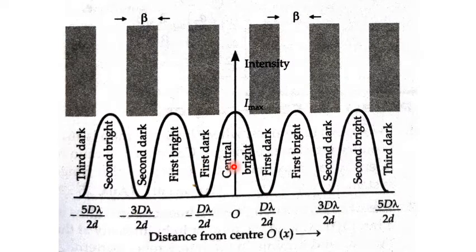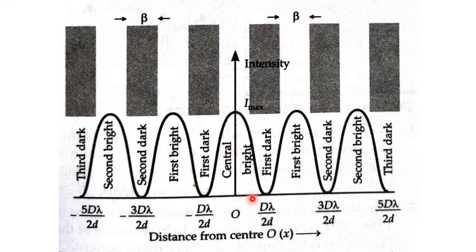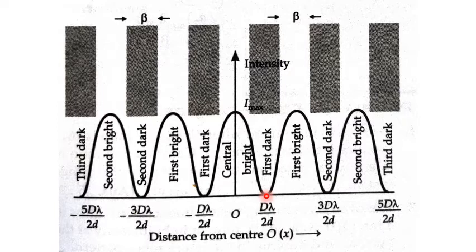This is your interference pattern. At the center point O, we obtain a central bright fringe, denoted Imax, which is 4KA². At a distance D·λ/(2d) we obtain the first dark fringe. You can refer to my previous videos where I derived the positions for dark fringes — dark fringes occur at odd multiples of D·λ/(2d), i.e., D·λ/(2d), 3D·λ/(2d), 5D·λ/(2d).